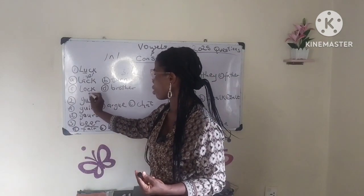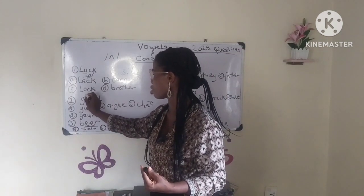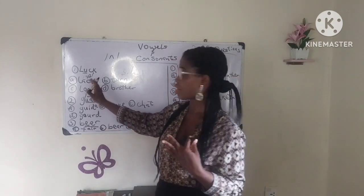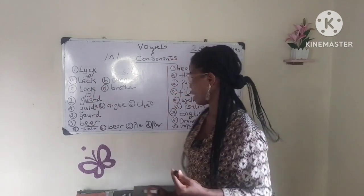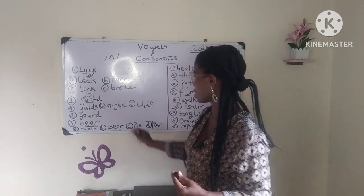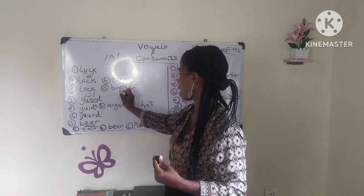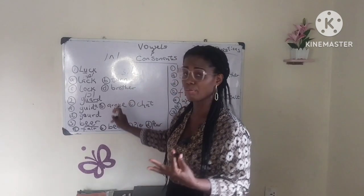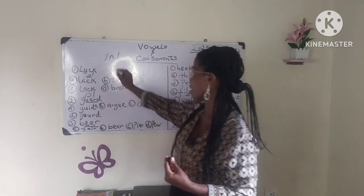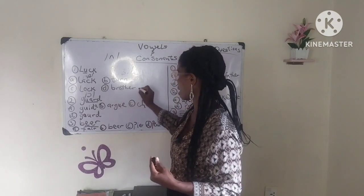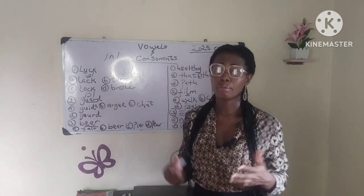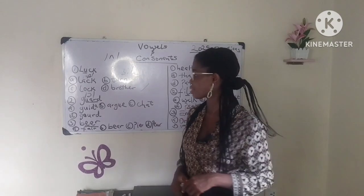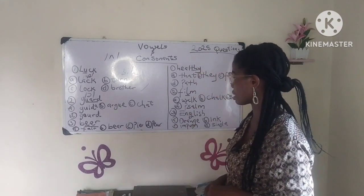What we have in option D is BROTHER. I mentioned in our English guide that the O in BROTHER is pronounced ɜː. So this is the correct answer. BROTHER — not 'brother', but BROTHER. So option D is the correct answer.